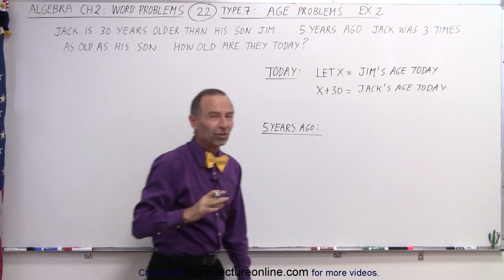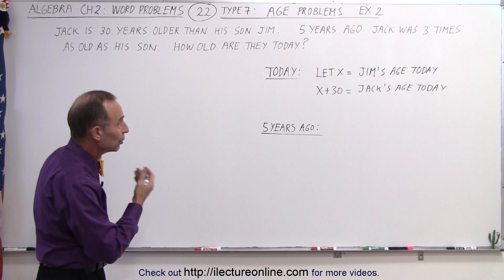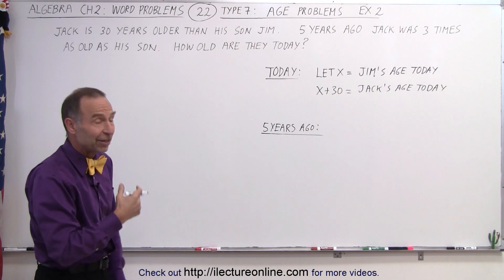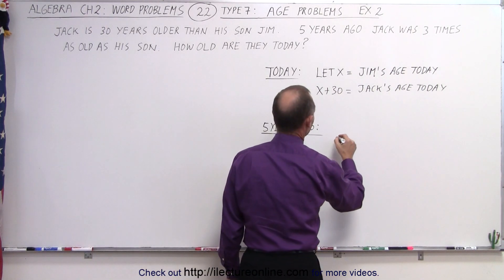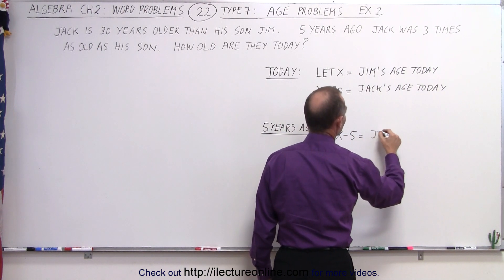Now we project ourselves five years into the past. Five years ago, we know that Jim would be five years younger. So we can say that x minus five equals Jim's age five years ago.